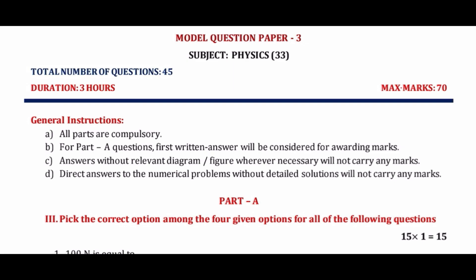Today I am going to discuss the physics midterm model question paper. It is applicable for all districts. The midterm question paper includes several sections: Part A, Part B, Part C, and Part D. The total allotted marks is 70 and the duration is 3 hours.